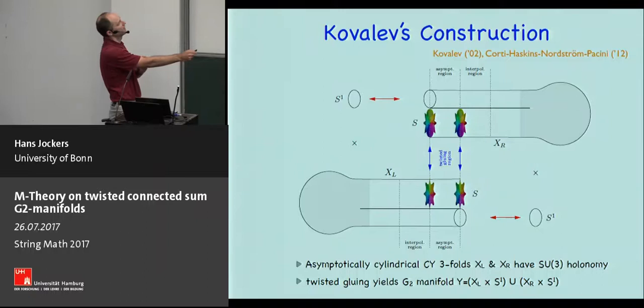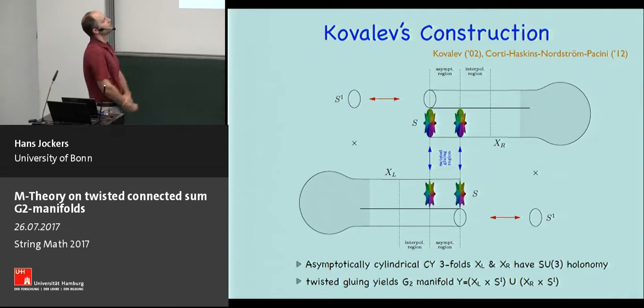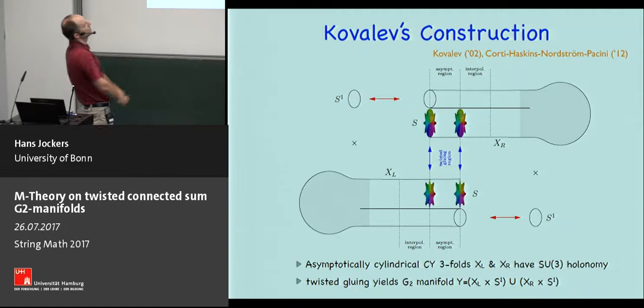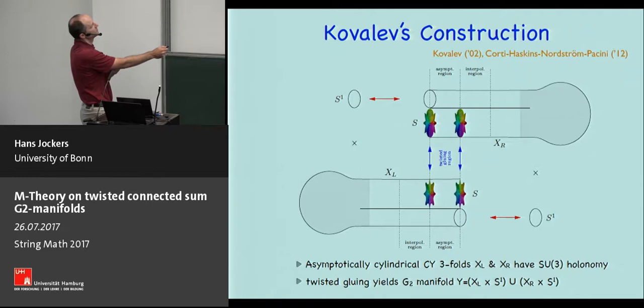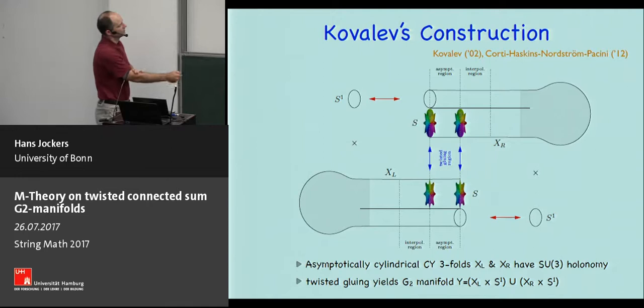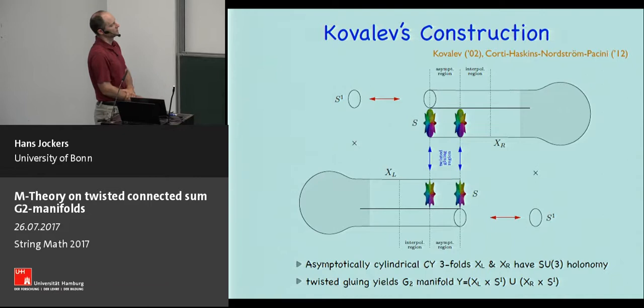The asymptotically cylindrical Calabi-Yau threefold has an asymptotic region where it looks like a K3 surface times a cylinder times an S1, and a region where it is capped off by some compact piece. If you take two such asymptotically cylindrical Calabi-Yau threefolds, the basic idea is to identify suitably the K3 surfaces in the asymptotic regions and also to identify the S1 from one asymptotic region with the S1 taken as the Cartesian product of the other space. If you do this identification properly you get G2 manifolds as a gluing of two such spaces.